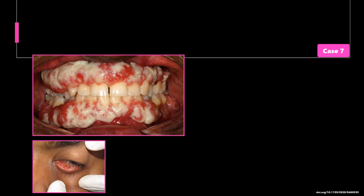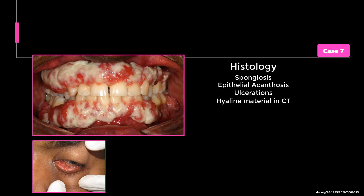He was afebrile and appeared relatively well. Intraorally, there was a general enlargement of the gingival tissues with surface ulcerations covered by thick fibrin-rich pseudomembranes. The hyperplastic tissue resembled healing granulation tissue but was soft to firm in consistency. Further periodontal evaluation established associated destruction of the periodontium, also observed on radiographic studies. An incisional biopsy was done and histopathology showed spongiosis, epithelial thickening with branching and interconnecting rete pegs, areas of erosion, and subepithelial pools of homogeneous hyaline material, which stained positively with Masson's scarlet blue stain but negative for Congo red, consistent with fibrin deposition subepithelially. A subepithelial chronic inflammatory periodontitis was also observed.